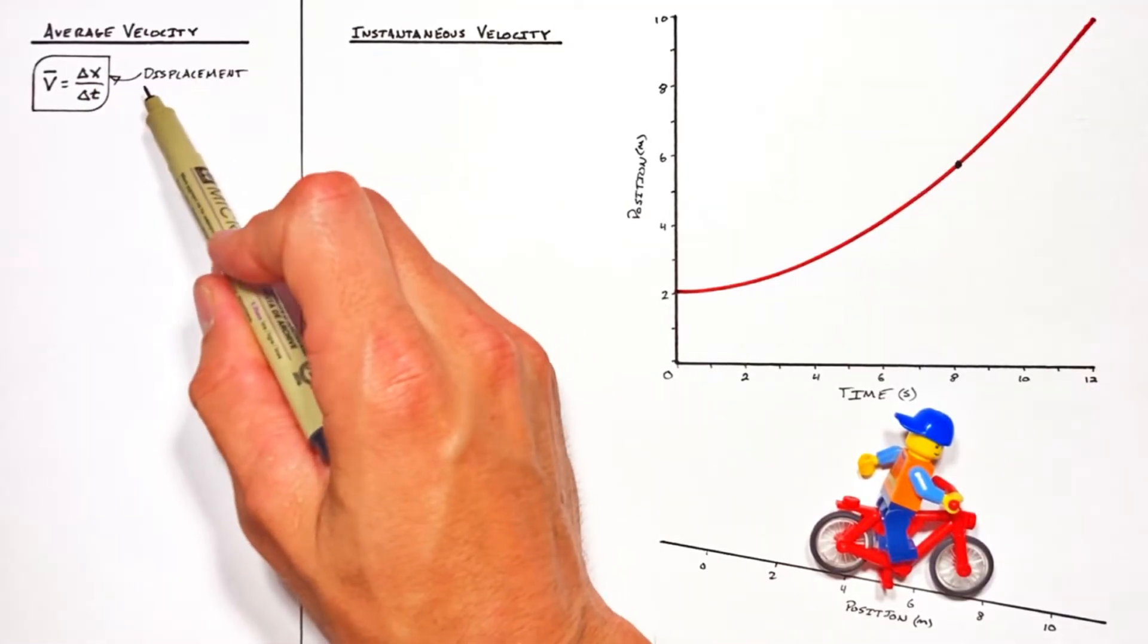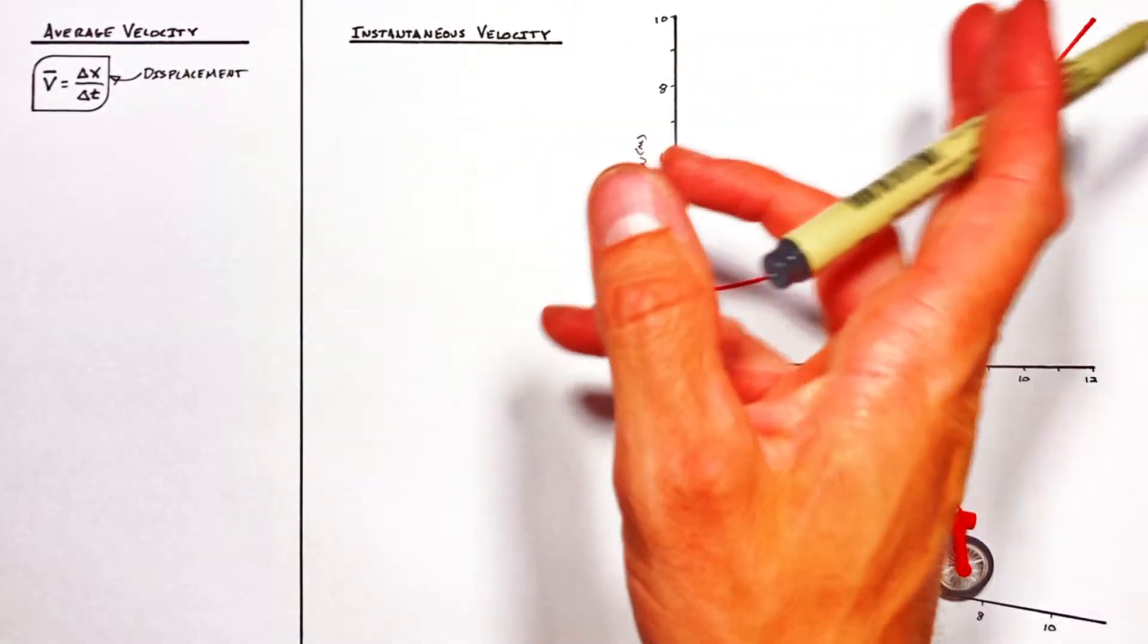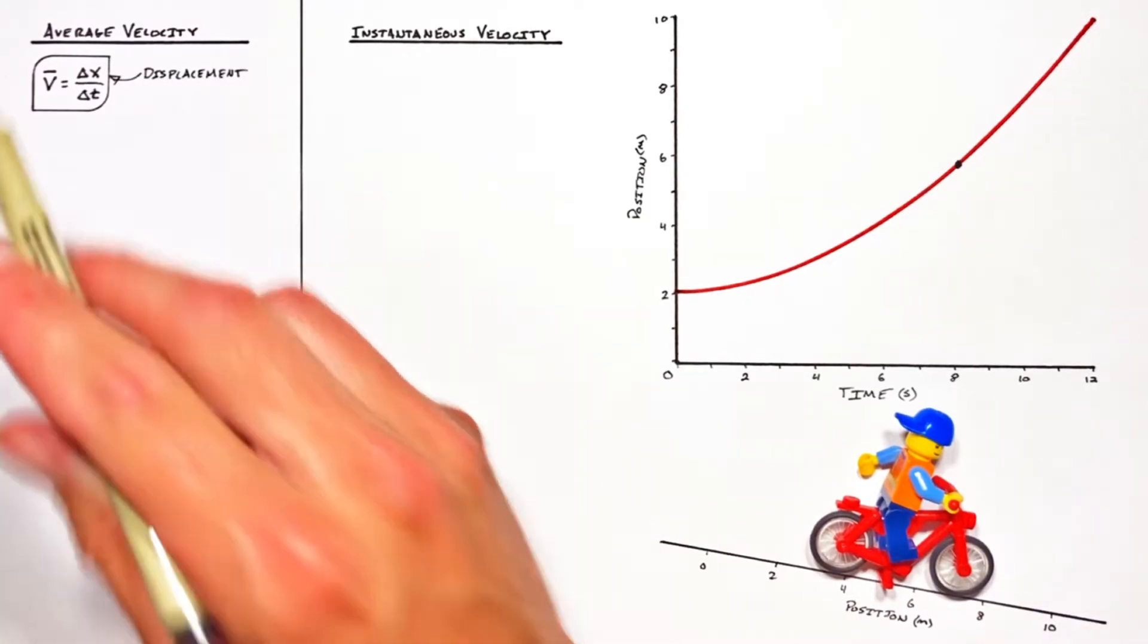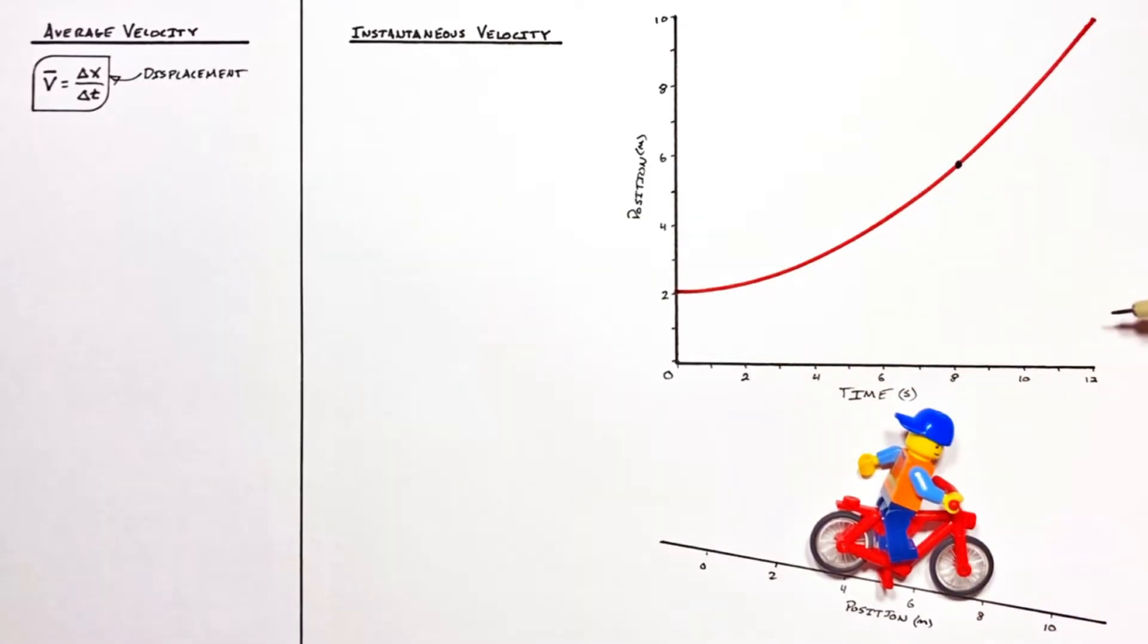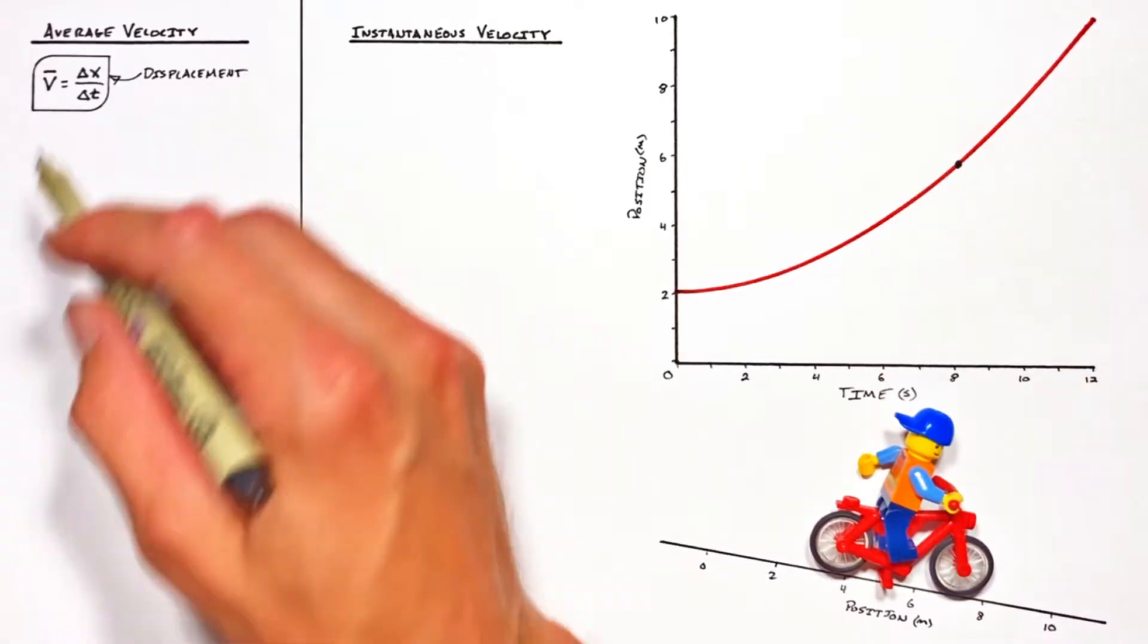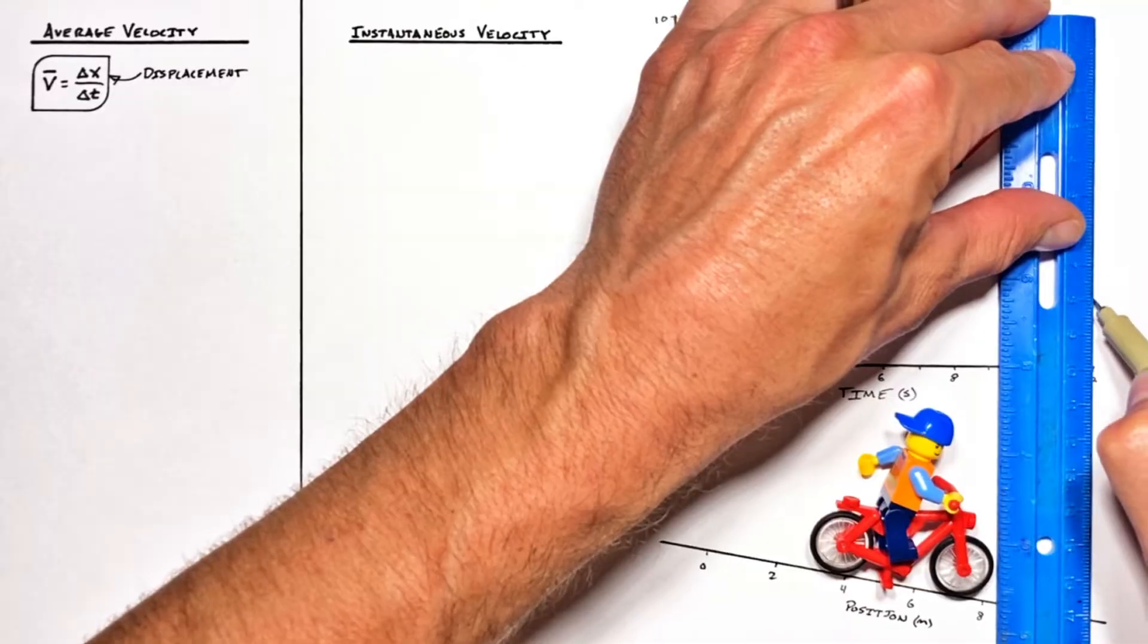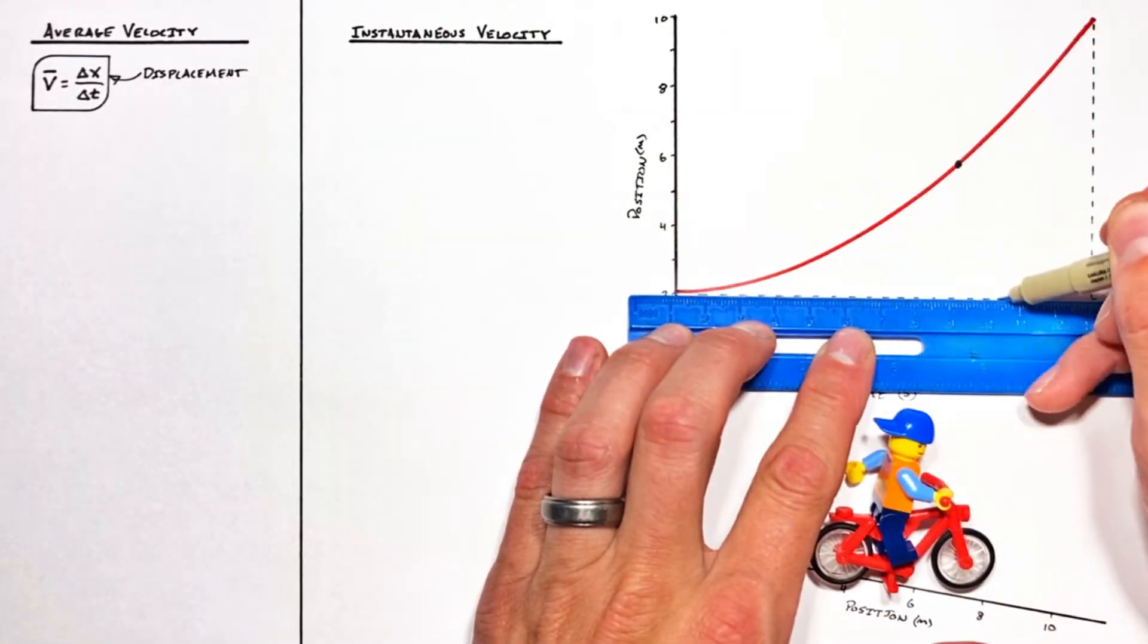Now if you're new to the channel or you just need a refresher on displacement, just click up here. I've got some videos on displacement that will straighten you out. So in order to find the average velocity of our little guy from the beginning to the end of this problem, we need to know two things. The first being his change in position and the next being the change in time.